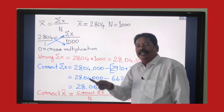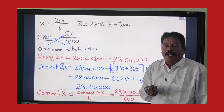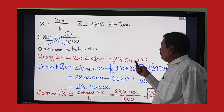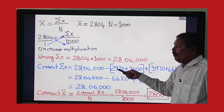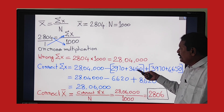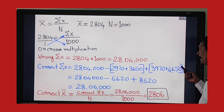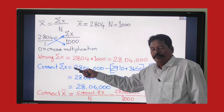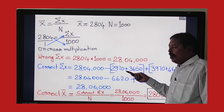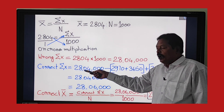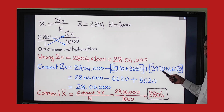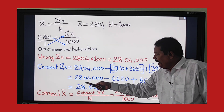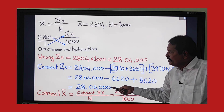We have to calculate the correct total wages of the thousand laborers, that is, the correct Σx. The formula is: Correct Σx = Wrong Σx − wrong data of two employees + correct data of two employees. Starting with wrong Σx of 28,04,000, we deduct the wrong figures and add the correct figures of the two employees to get the correct Σx.